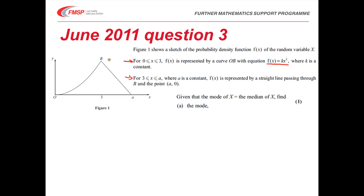We're asked to find the mode. We need to realize that the mode is the highest point on the graph. So the mode in this case equals 3, which will give you a B mark.